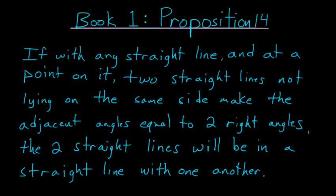For book 1 proposition number 14 of Euclid's Elements, if with any straight line and at a point on it, two straight lines not lying on the same side make the adjacent angles equal to two right angles, the two straight lines will be in a straight line with one another.